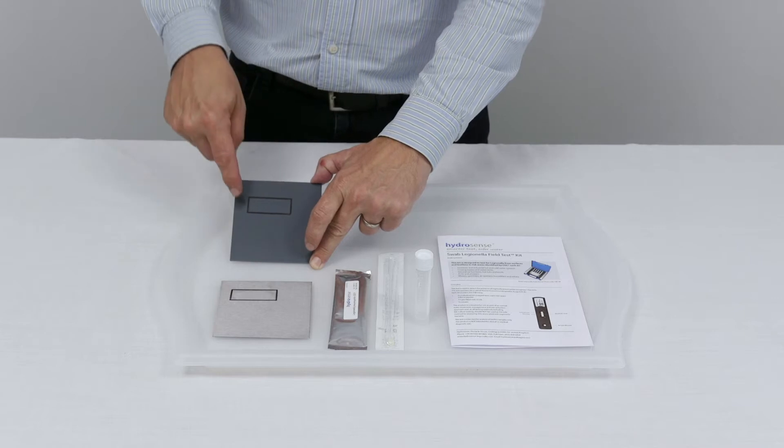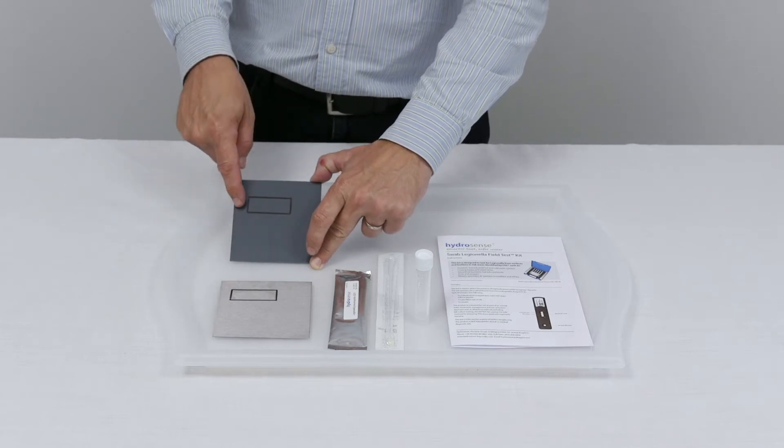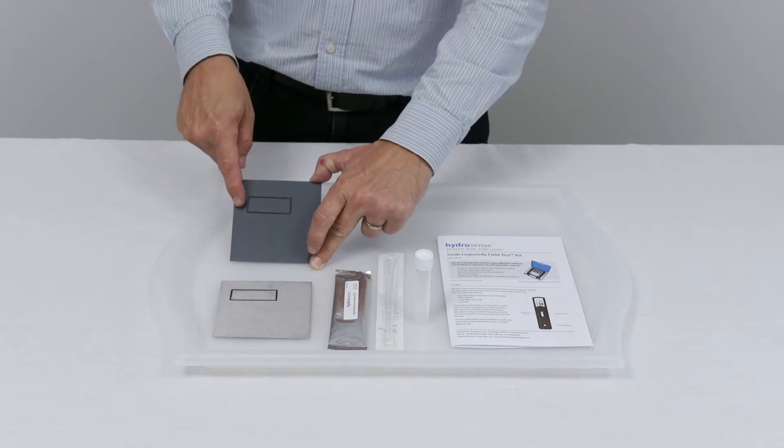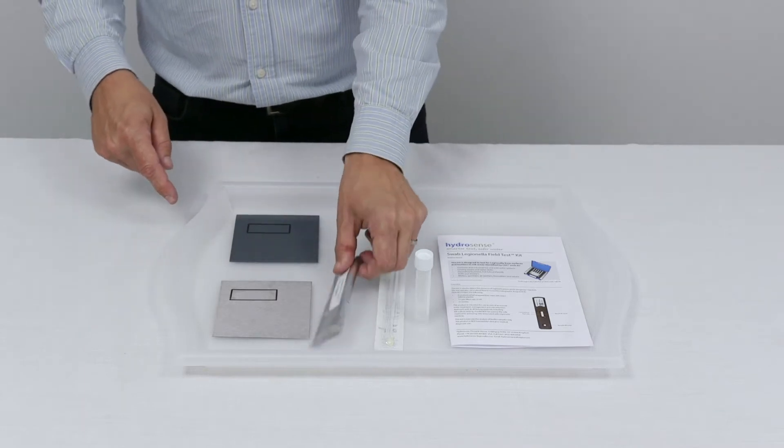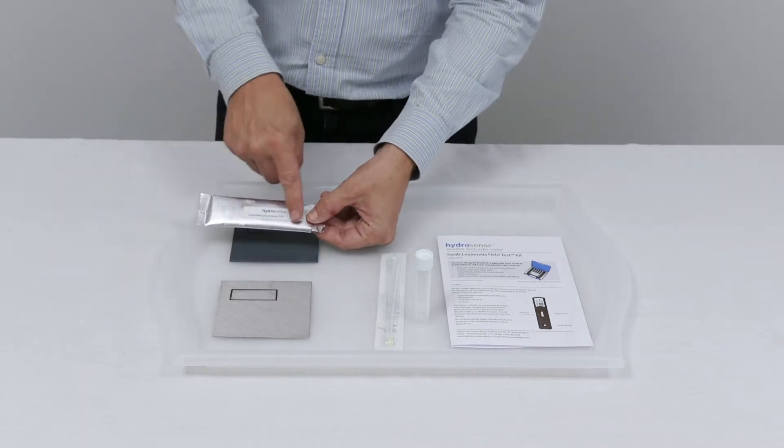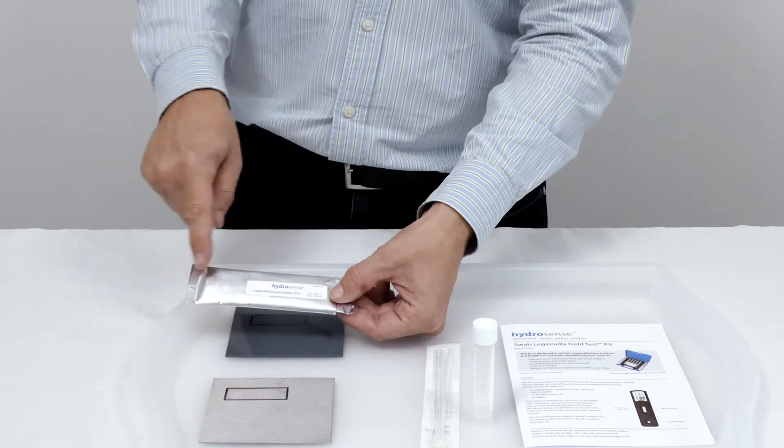The sample size and swabbing area should be 10 centimeters squared. I've marked a rectangle here which is five by two, which is 10 centimeters squared. That's approximately the same size as the label on the front of the foil. You can sample larger areas, but the minimum size of 10 centimeters squared must be sampled.